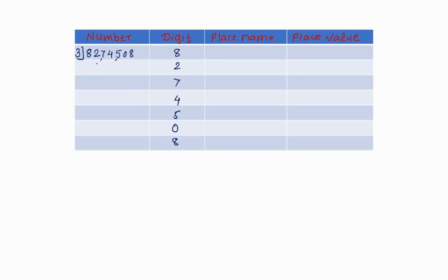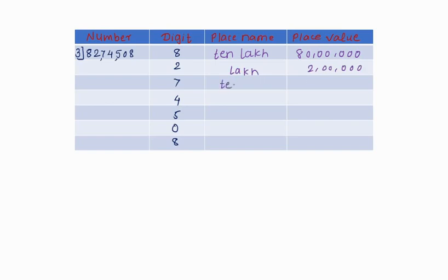Third number is 8,07,45,08. First digit 8: its place name is 10 lakh and place value is 80 lakh. Next digit 2: place name is lakh and place value is 2,00,000. Next digit 7: place name is 10,000 and place value is 70,000. Next digit 4: place name is 1000 and place value is 4000.